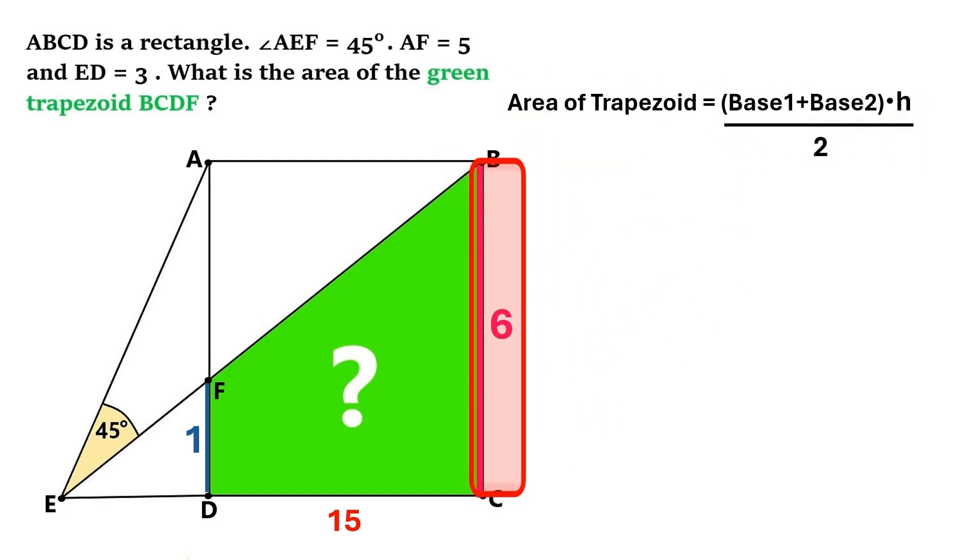This is a formula for the area of a trapezoid. This is the base 1. It's 6. So let's write 6 here. And this is the base 2. It's 1.